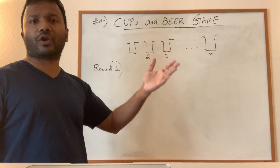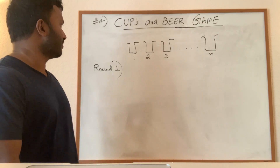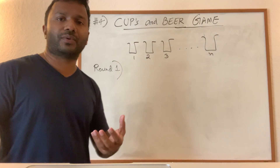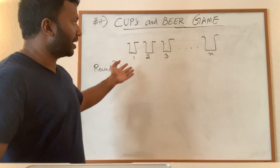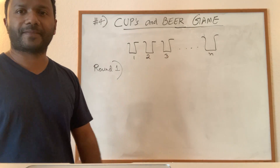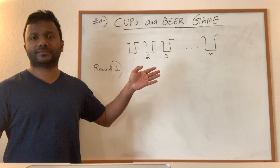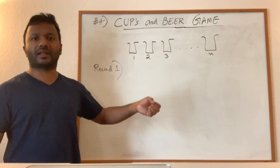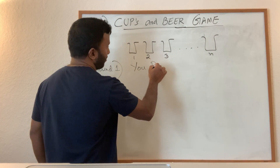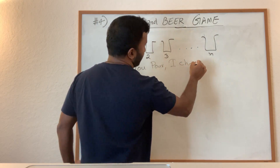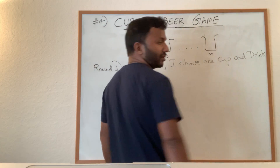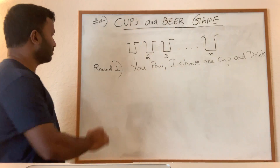For example, you can pour the whole one liter into cup number three, or pour it equally so each cup has 1/N liter. That is what you do on your turn. Then on my turn, I will choose one of these cups and drink all the beer in that cup. So you pour into N cups, then I choose one cup and empty it — that is round one.